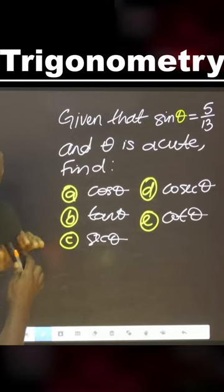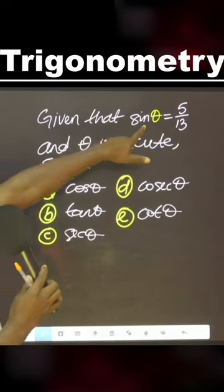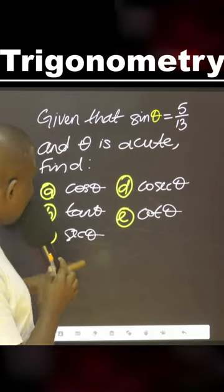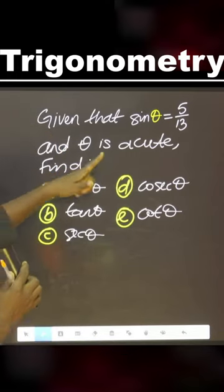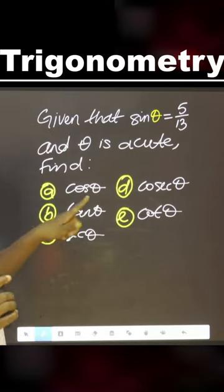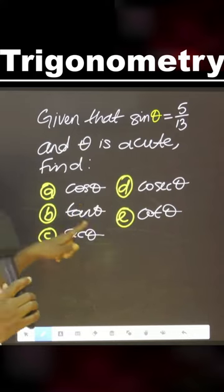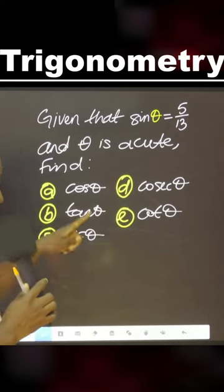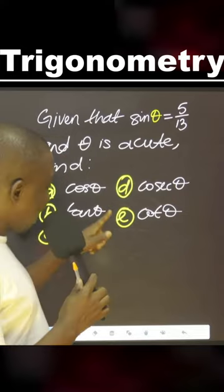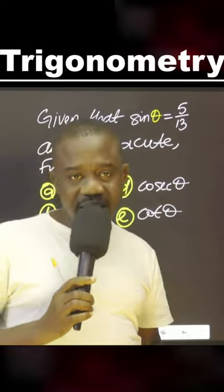Let's look at this. It says given that sin theta equals 5 over 13 and theta is acute, find A: cos theta, B: tan theta, C: sec theta, D: cosec theta, E: cot theta.